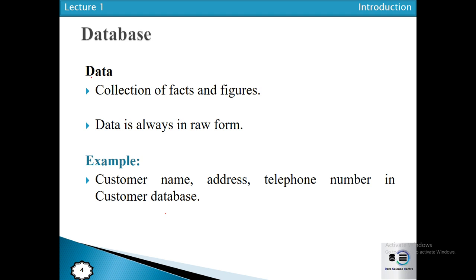Data may be related to any object — an object can be a chair, a student, a course, or any event that can be recorded on computer media. Data is always in raw form; we may not be able to use data directly for decision making. Data never increases the knowledge of the person who uses it. For example, raw data like a name, address, or telephone number has no context on its own.